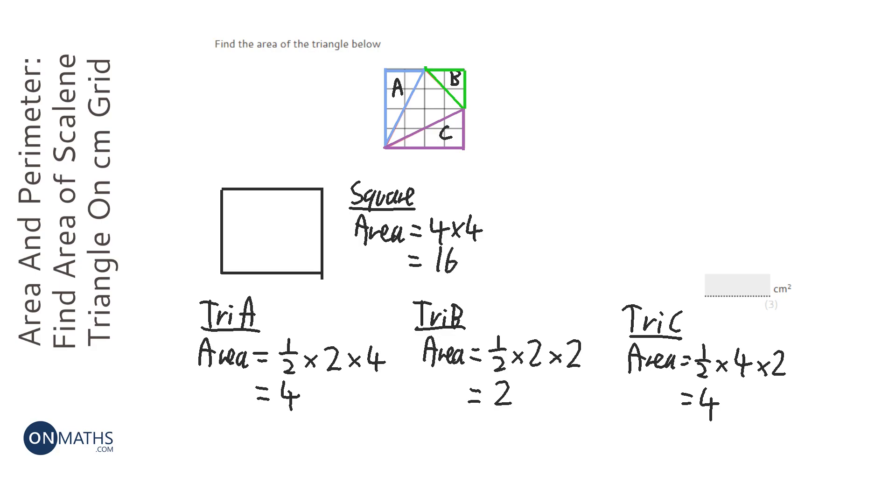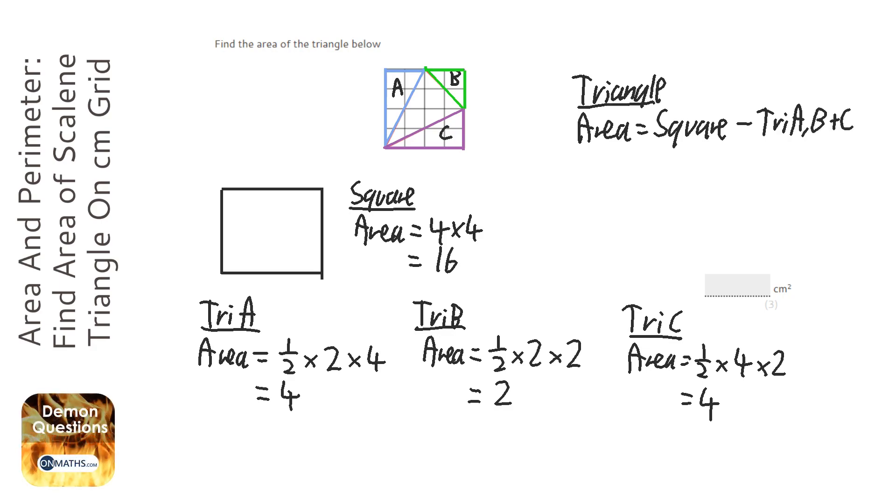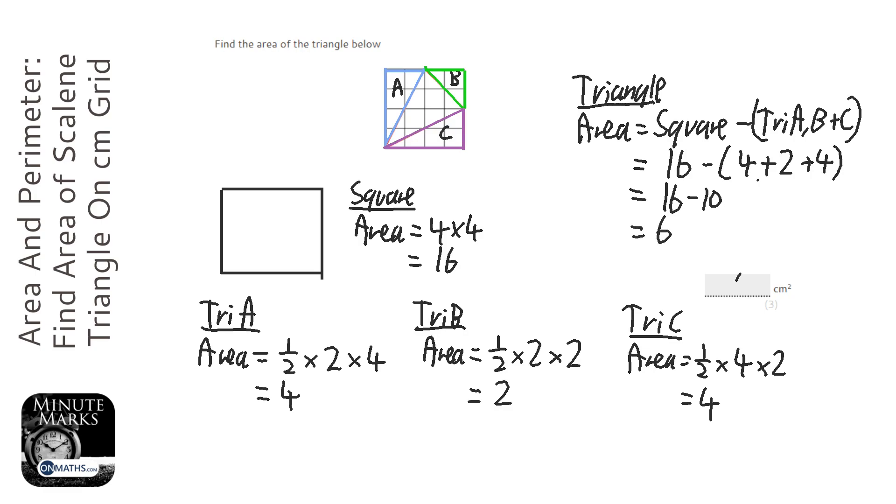Okay, so the area of the triangle is the square. So the square, take away the bits we don't want, so take away triangle A, B, plus C. So the square is 16, and we're going to take away the bits we don't want, so that's four, plus two, plus four. Four plus four is eight, plus two is ten, so it's 16 take away ten, and that leaves six. So the answer is six.